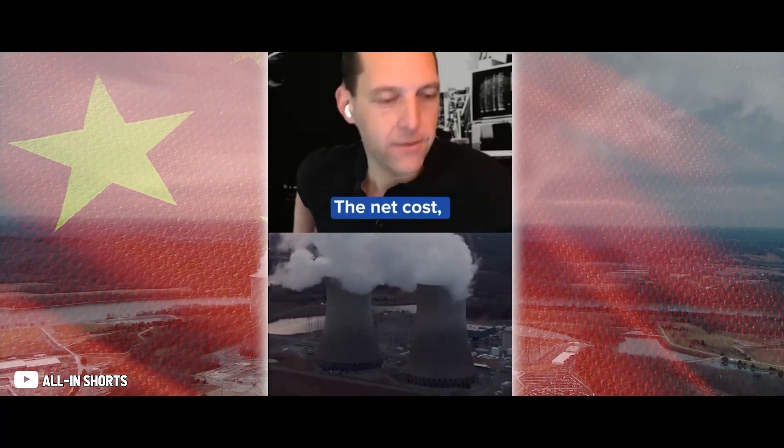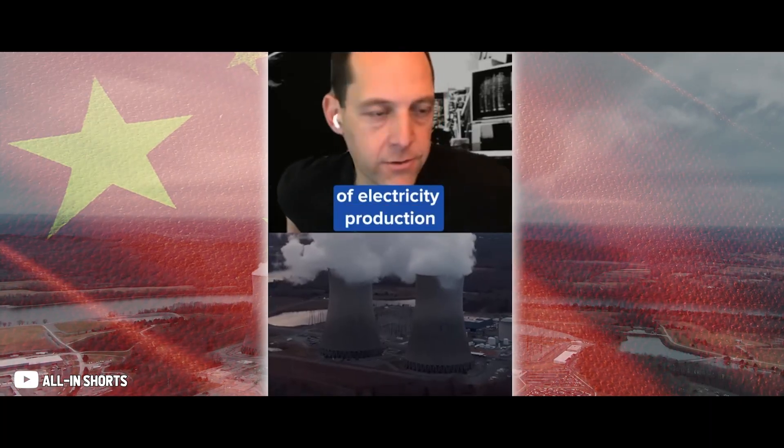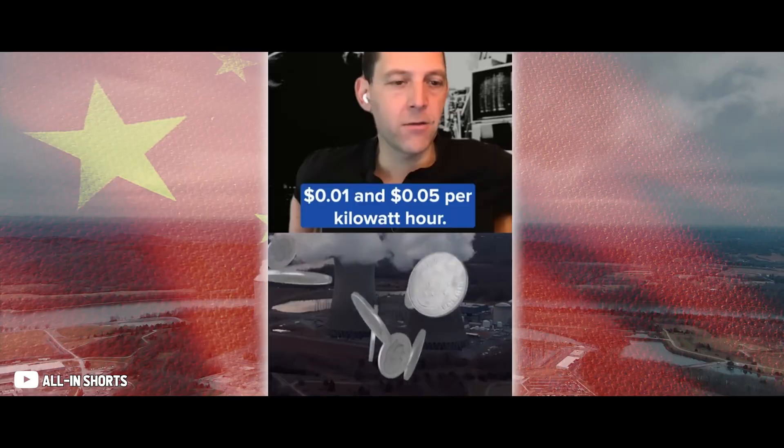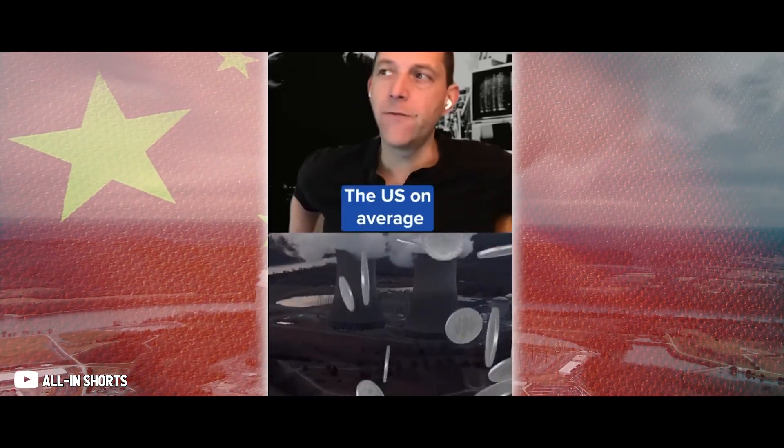China has declared that they're building 450 nuclear power plants. The effective cost of electricity production from a nuclear power plant is between 1 and 5 cents per kilowatt hour. The U.S. on average is paying 11 to 15 cents per kilowatt hour.